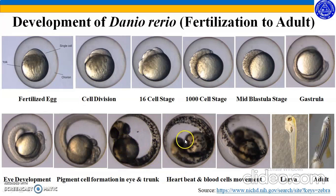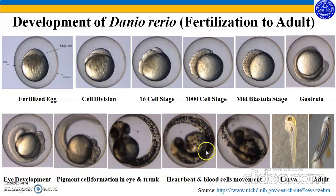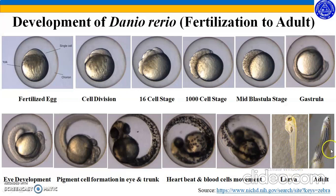After this, the organism moves for the first time inside the chorion. The heartbeat can be seen, and the movement of the blood cells can be seen. Once it reaches this stage, the larva becomes ready to hatch from the chorion, and depending on its muscular activity, the larva hatches and becomes a free-swimming organism. This larva then undergoes morphogenesis and forms the adult zebrafish.